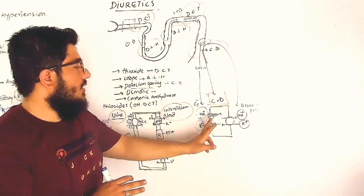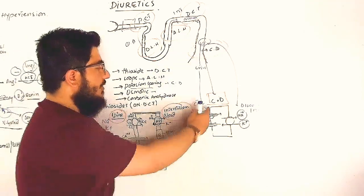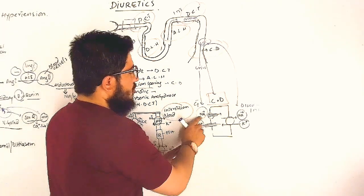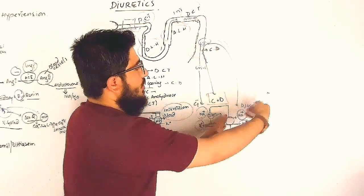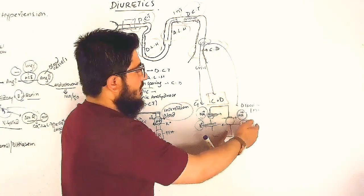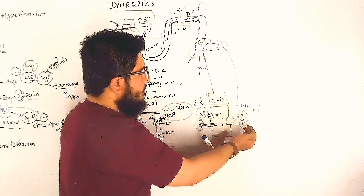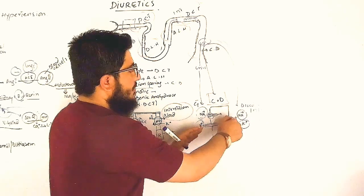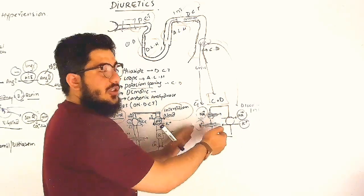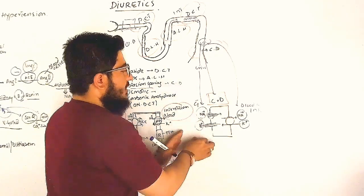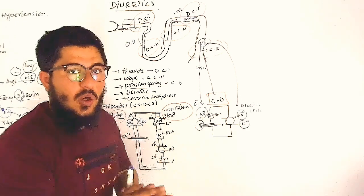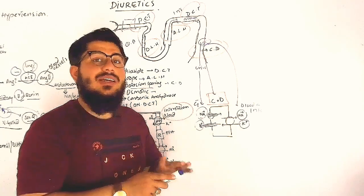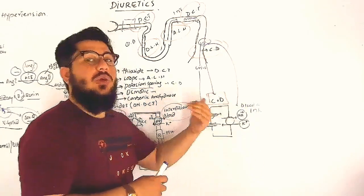At the collecting duct, the lumen side has sodium and potassium channels. Sodium entry from urine is absorbed toward the interstitium. Because of the antiport, potassium goes into the lumen and is mixed into the urine — this is potassium loss, resulting in hypokalemia, which means low potassium in the blood.